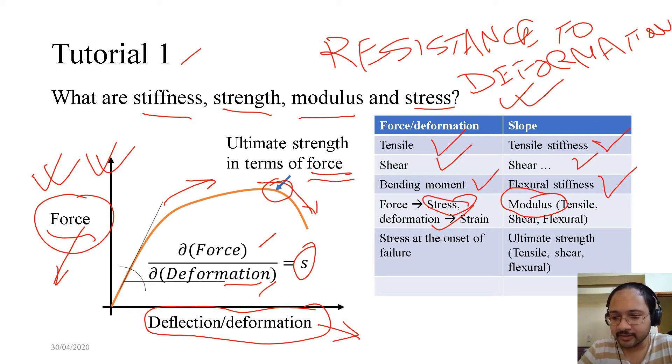So modulus, in physical terms, it is the resistance to deformation. Now, if it's a tensile deformation, then the resistance would be tensile, and we call it tensile modulus. Similarly, shear modulus, flexural modulus. Now, stress at the onset of failure, that is called as the ultimate strain. Now, what failure is it, or what stress are we talking about? If the load is tensile, it is the ultimate tensile strain. If the load is shear, it is the ultimate shear strain. If the load is flexural, if it's due to a bending moment or a bending load, then it becomes an ultimate flexural strain.